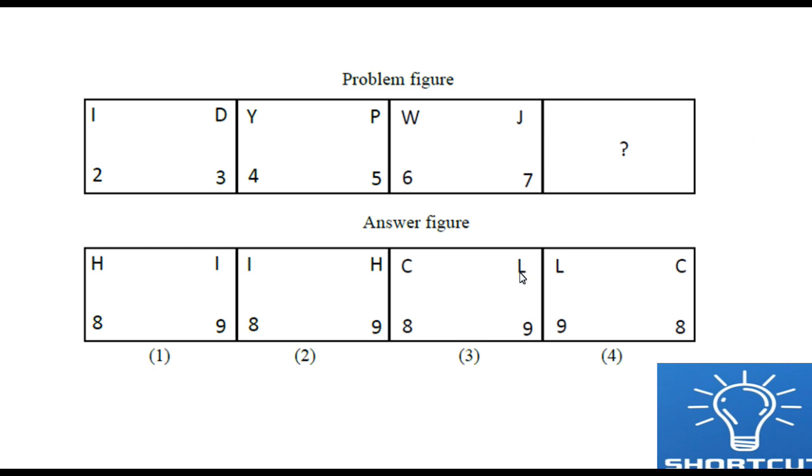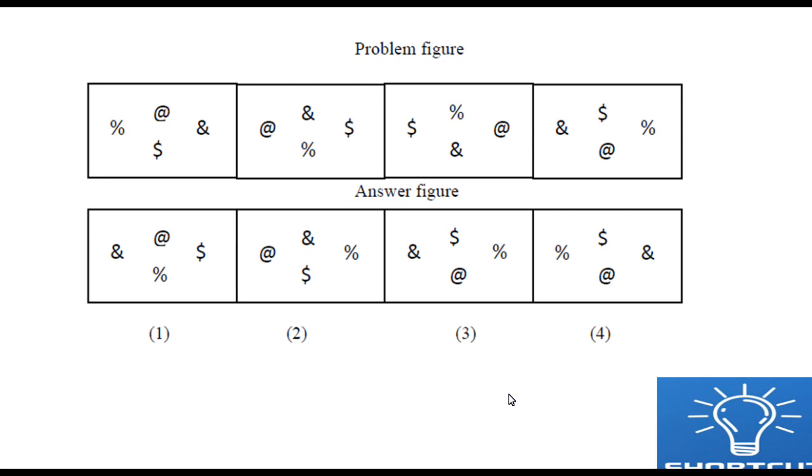So 12th alphabet is L. Which option is L? This one is L. So third option is correct. 8 square is 64, this alone is L. 9 square is 81 will be C. Shall we go to the next question?